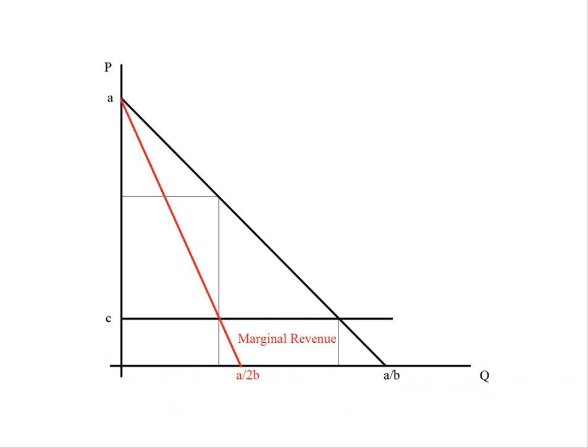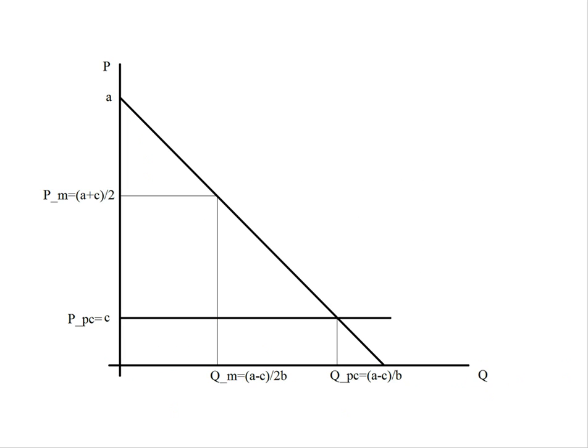We've now characterized the extreme points of the market spectrum — here's our monopoly outcome and here's our perfectly competitive outcome. Our objective today in the later segment is going to be to plot the oligopoly outcome on that spectrum.